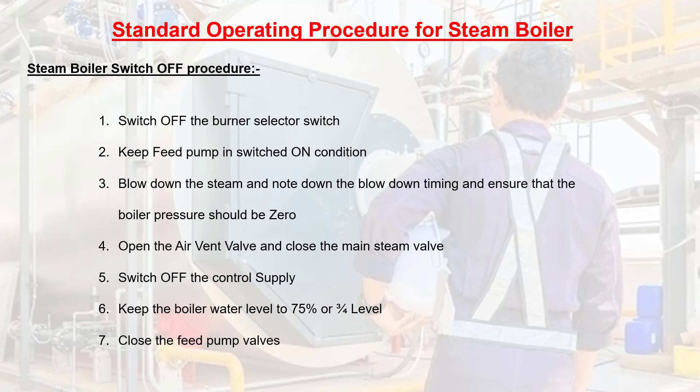Steam Boiler Switch OFF Procedure: Step 1: switch OFF the burner selector switch. Step 2: keep the feed pump in switched ON condition. Step 3: blow down the steam, note down the blowdown timing, and ensure that the boiler pressure reaches 0. Step 4: open the air vent valve and close the main steam valve. Step 5: switch OFF the control supply. Step 6: keep the boiler water level at 75% or three-quarters level. Step 7: close the feed pump valves.